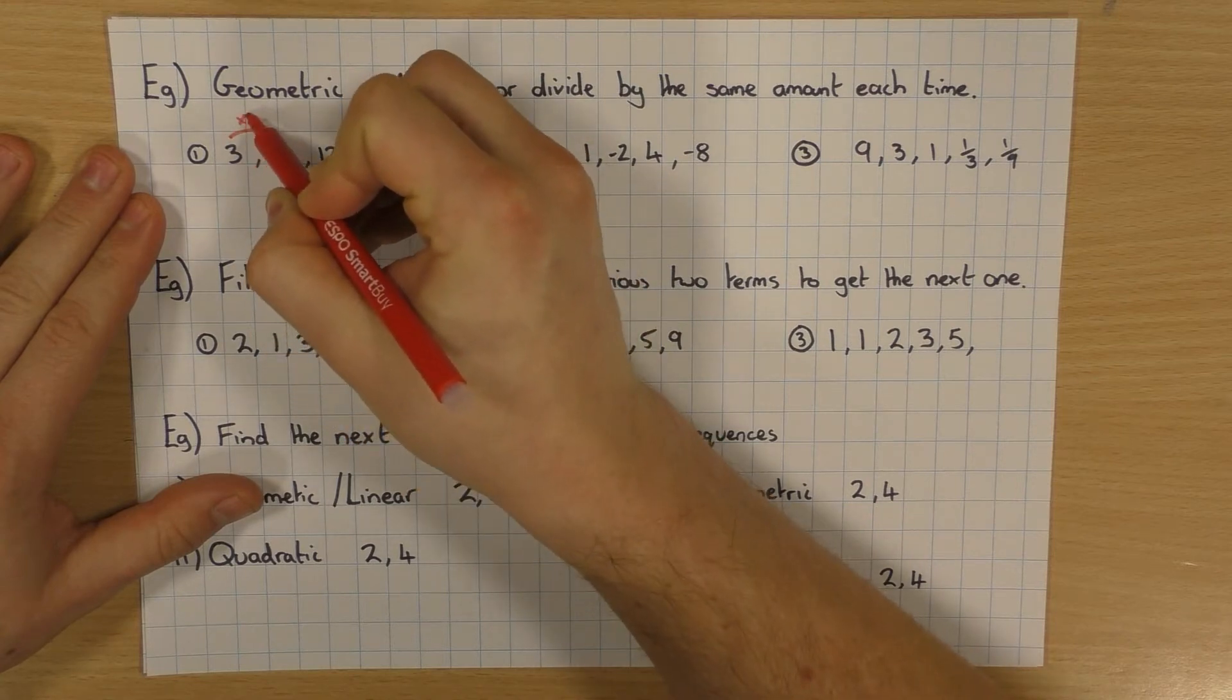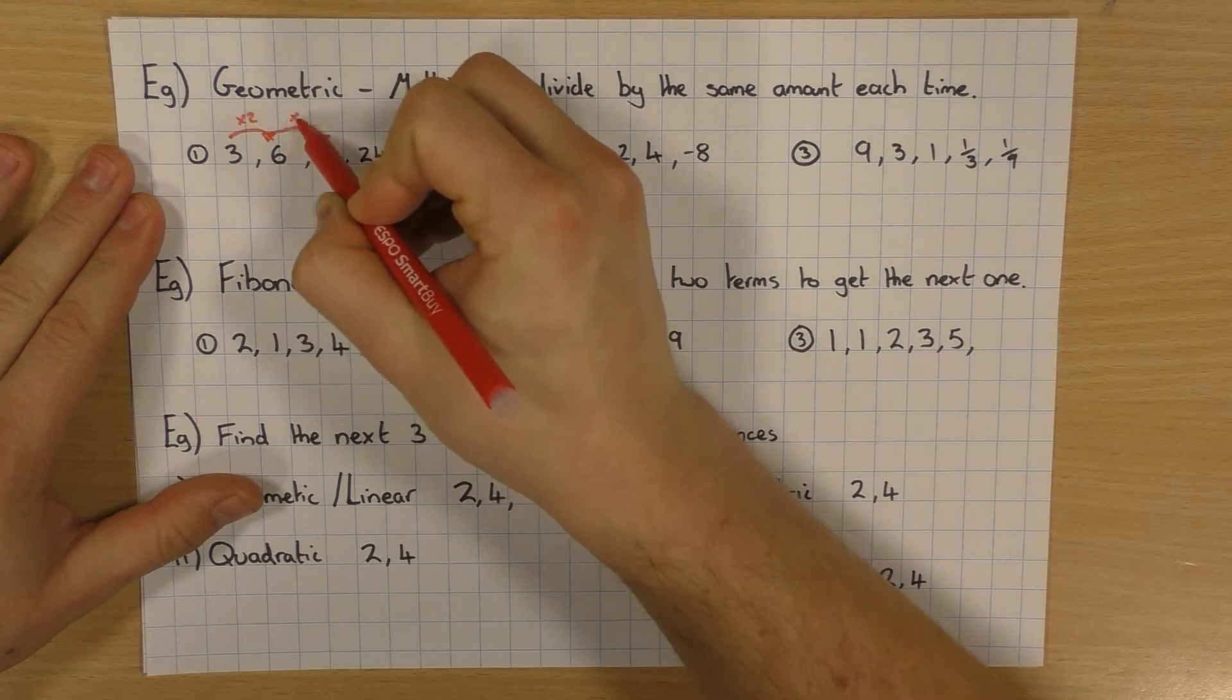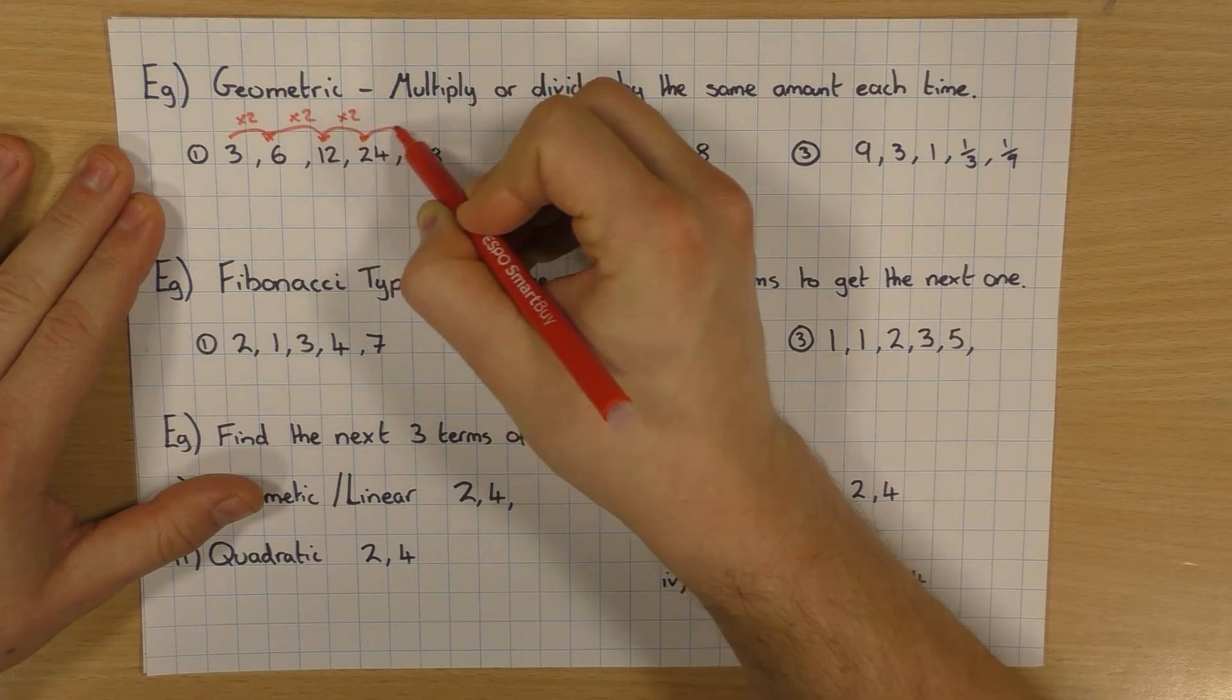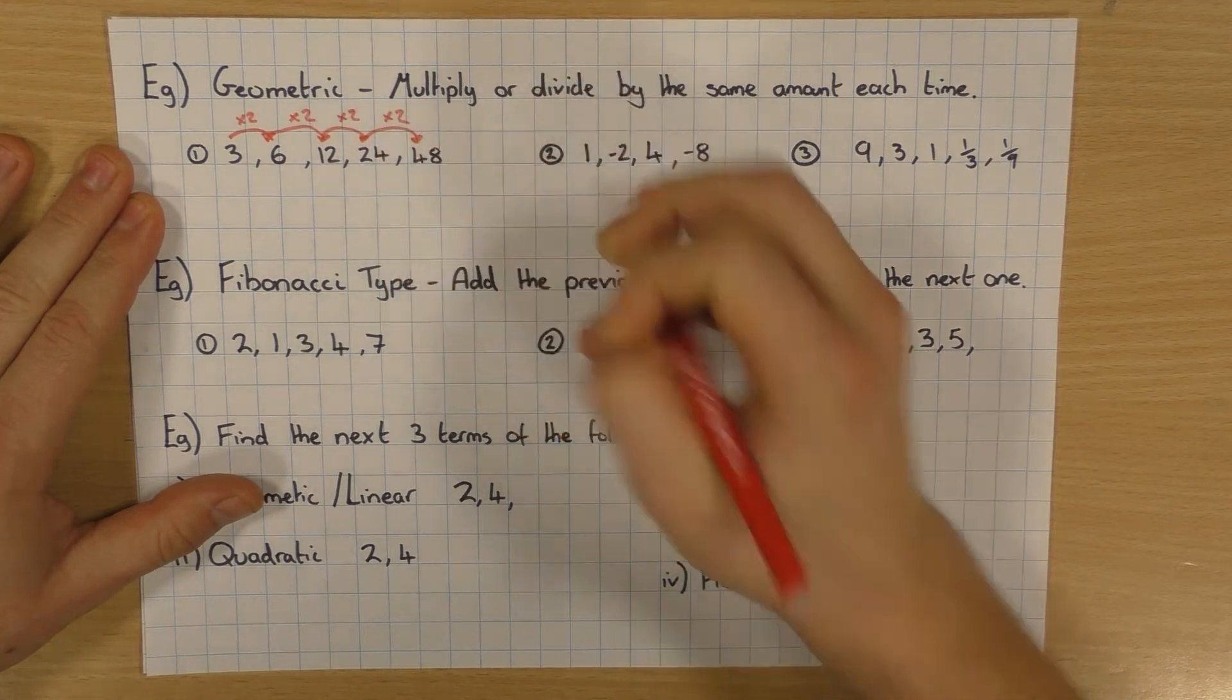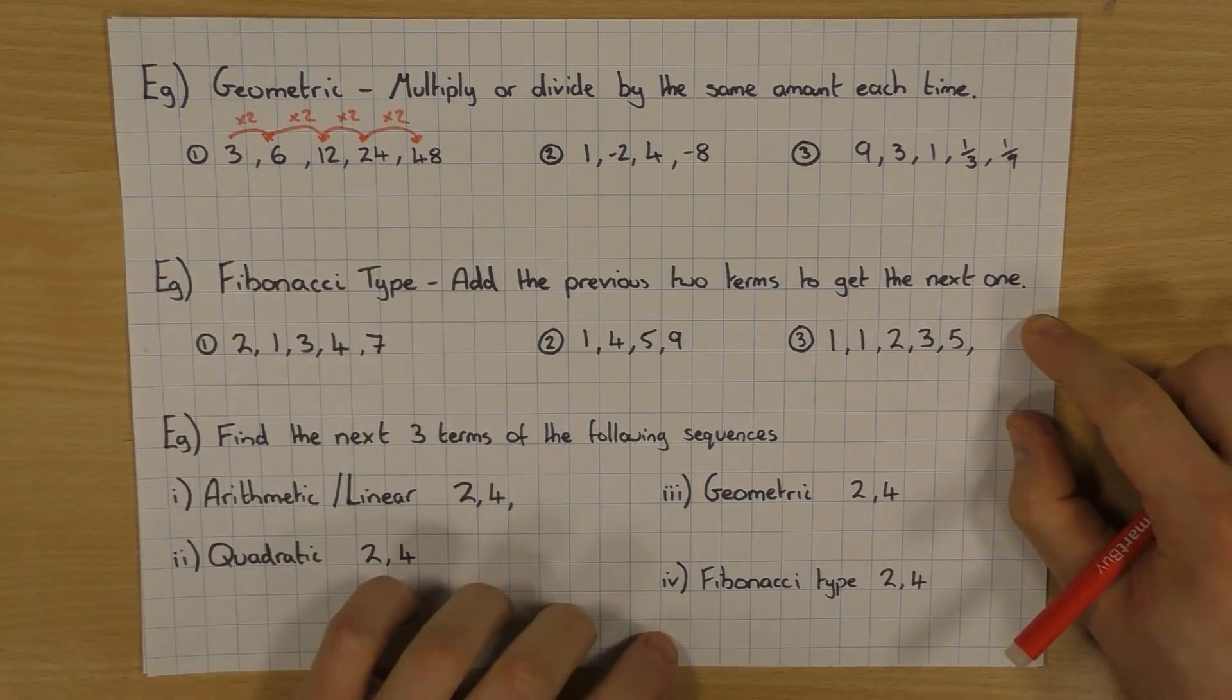So, geometric is when we are multiplying by the same amount each time. So if I look at these ones here, how do I go from 3 to 6? I times by 2. How do I go from 6 to 12? Again, I times by 2. I times by 2. And I times by 2. So, clearly a geometric because I'm doubling the number each time.